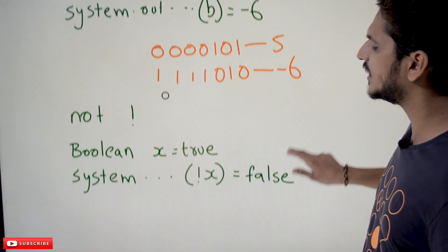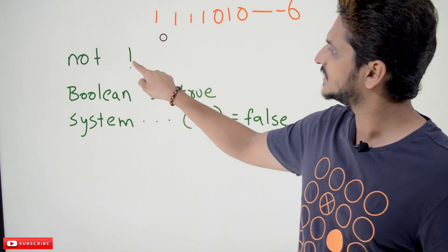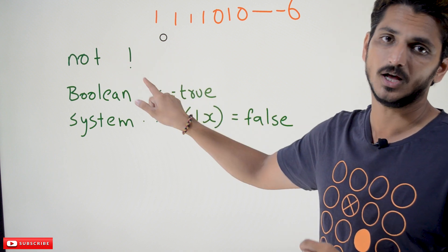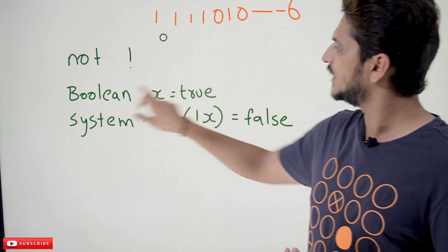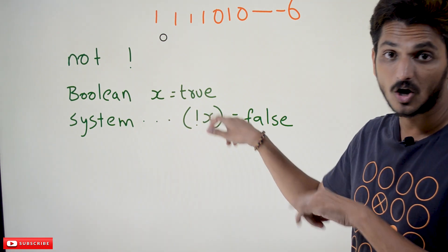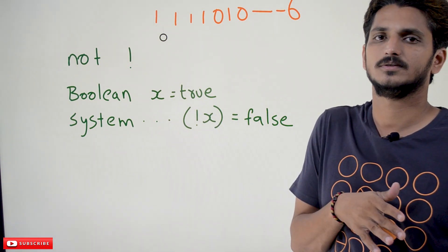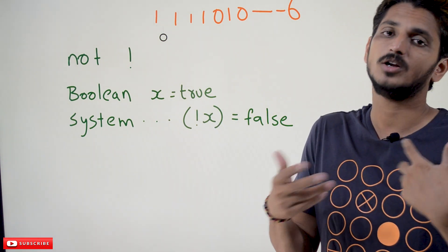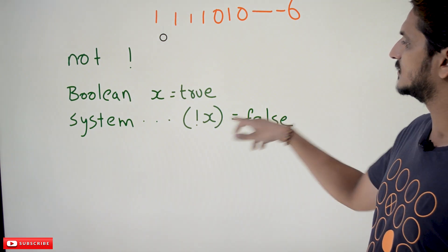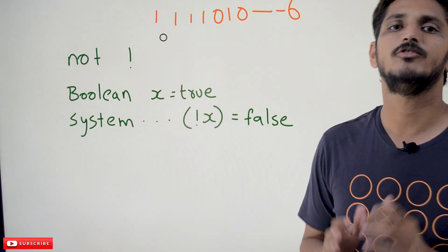Now coming to logical NOT. The exclamation mark (!) is the symbol for logical not. For example: boolean x = true. System.out.println(!x) — the meaning is: NOT true means false. So it is going to display false.